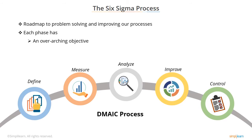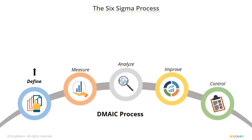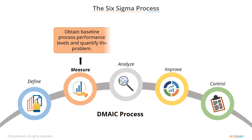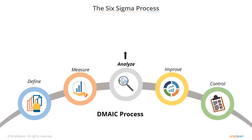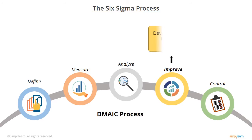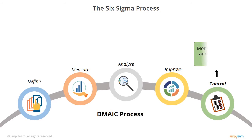Each phase has an overarching objective and specific deliverables that need to be completed, which helps us achieve the objectives. The purpose of the Define phase is to document the problem, the desired outcome, goals, and deliverables. The purpose of the Measure phase is to obtain baseline process performance levels and quantify the problem. The focus of the Analyze phase is to identify the key root causes for process variation and defects. The purpose of the Improve phase is to develop, test, and implement the solutions. The goal of the Control phase is to monitor the key factors and maintain the gains.